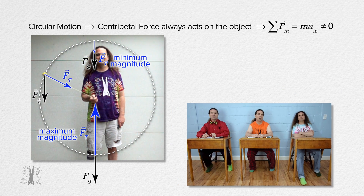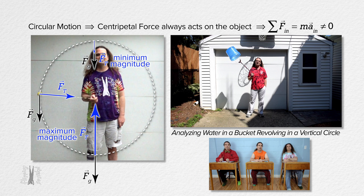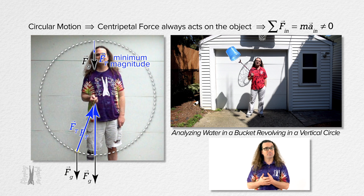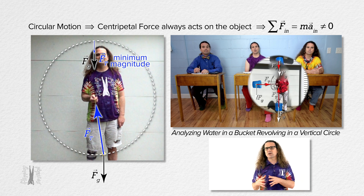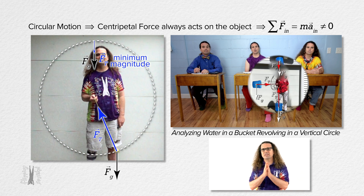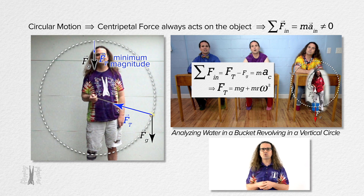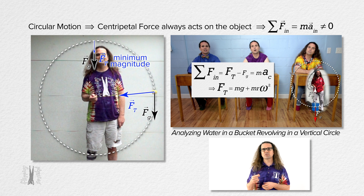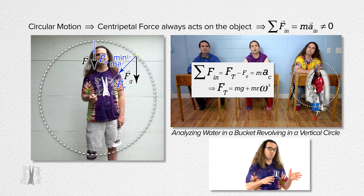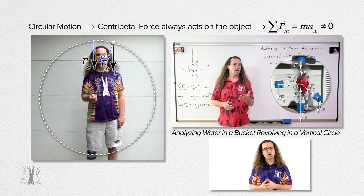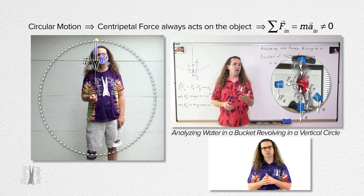The force of tension has a minimum magnitude when the ball is at the top of its path, where the force of gravity is pointed directly in toward the center of the vertical circle, which is the same direction as the force of tension. We already talked about this with the water in a bucket moving in a vertical circle; however, today we are going to get into more of the details. In order to understand how these forces affect the motion of the ball, we need to break forces into components, something we did not do in the water-in-a-bucket lesson.